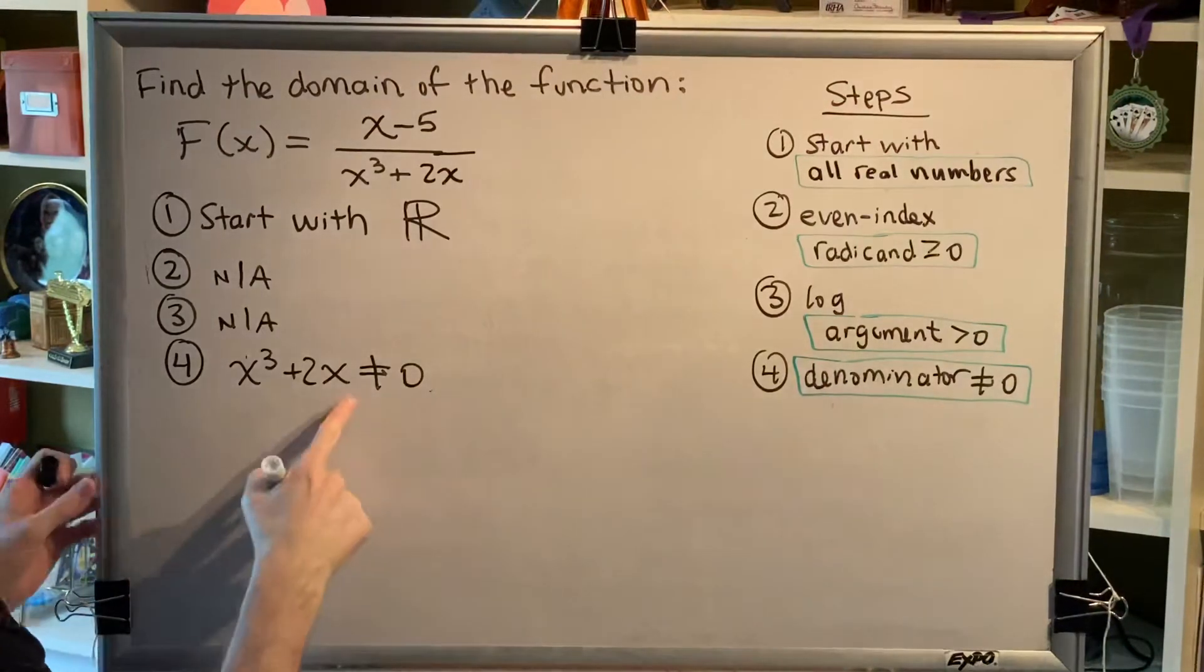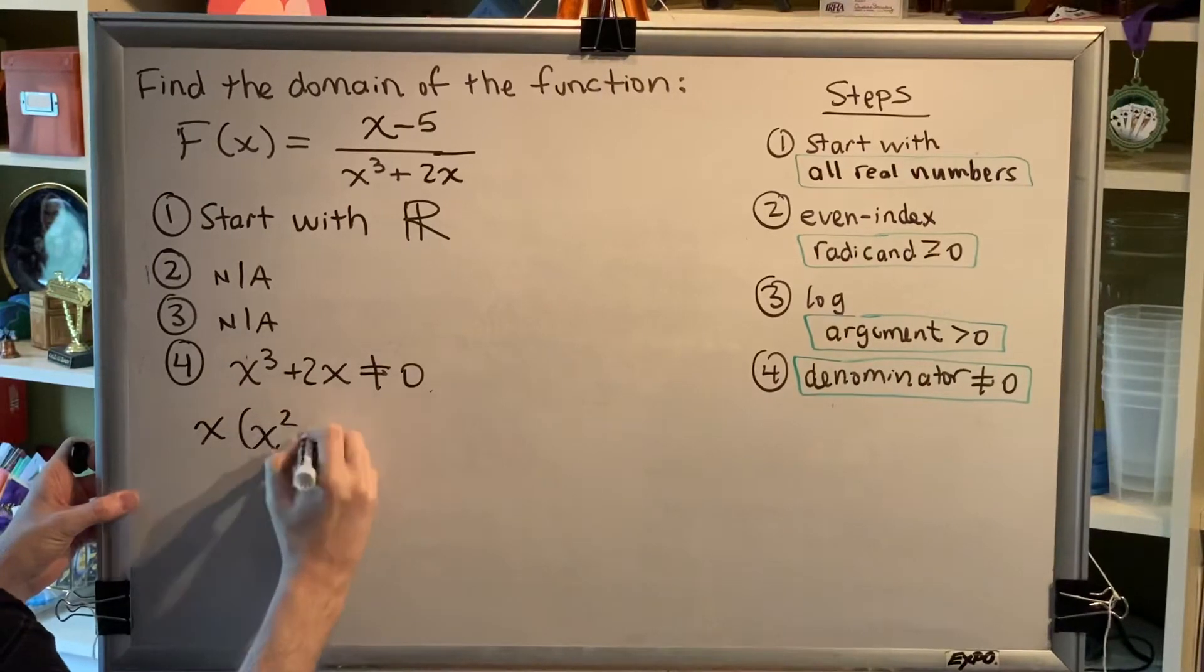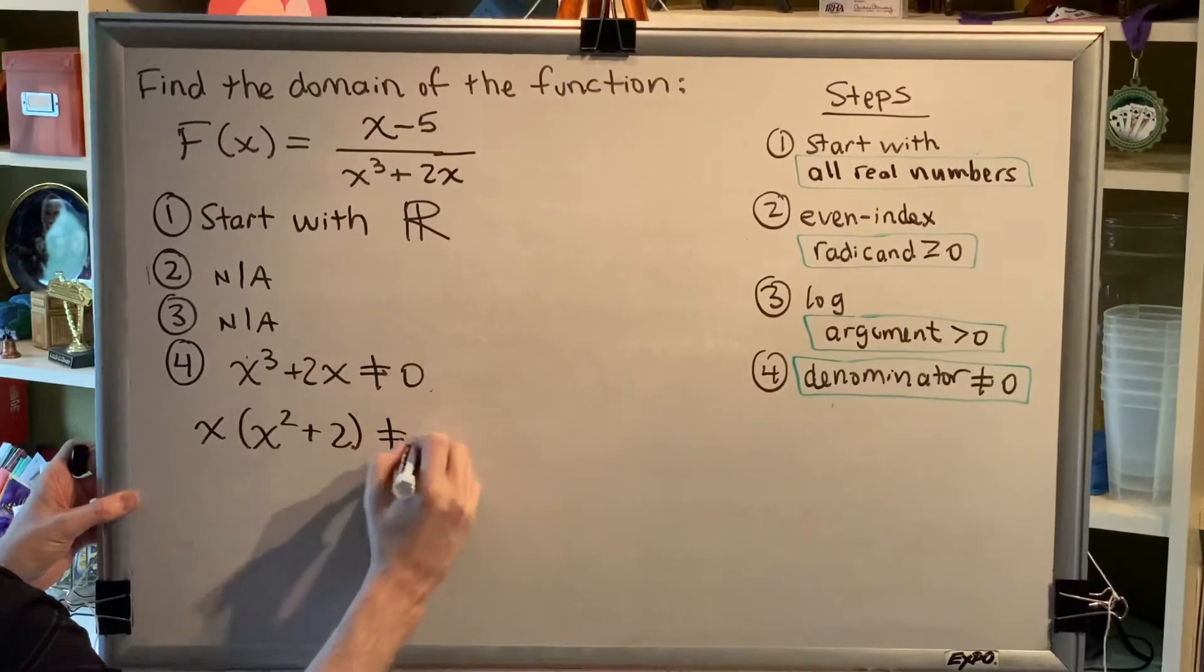Let's solve this by factoring. The greatest common factor here is x. So when we take out an x, what will be left would be x squared plus 2 is not equal to 0.